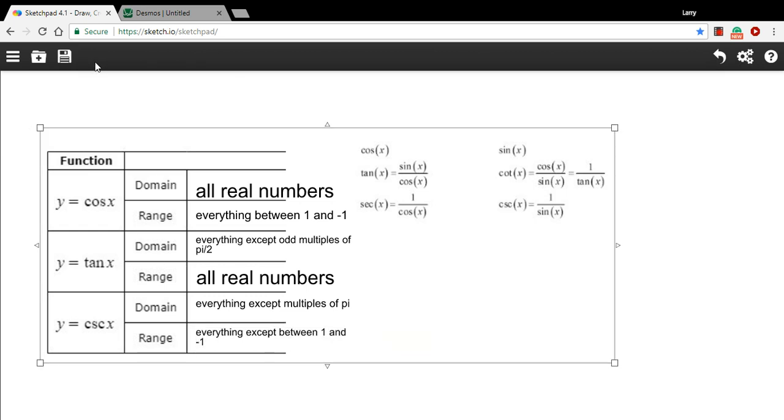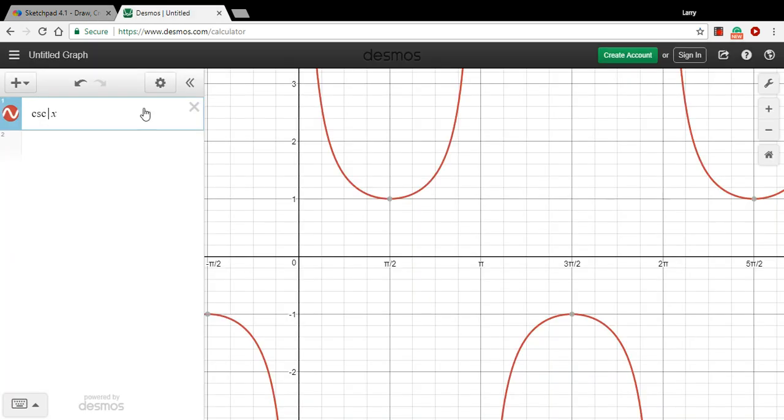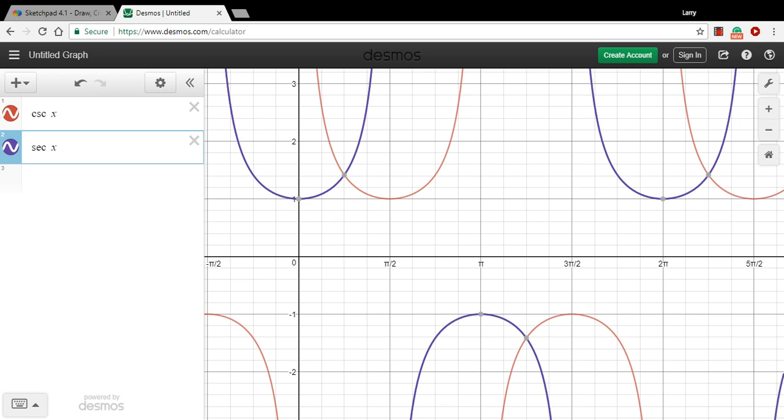All right. So that's the cosecant. How about the secant? What does that look like? Let's put that up here as well. And you can see that's very similar. It's just shifted over a bit.